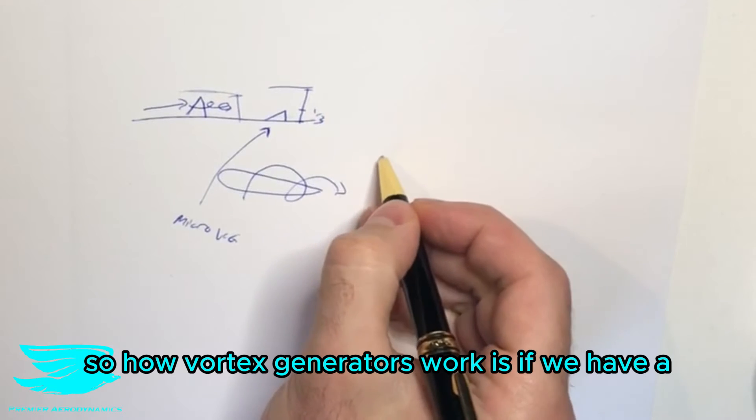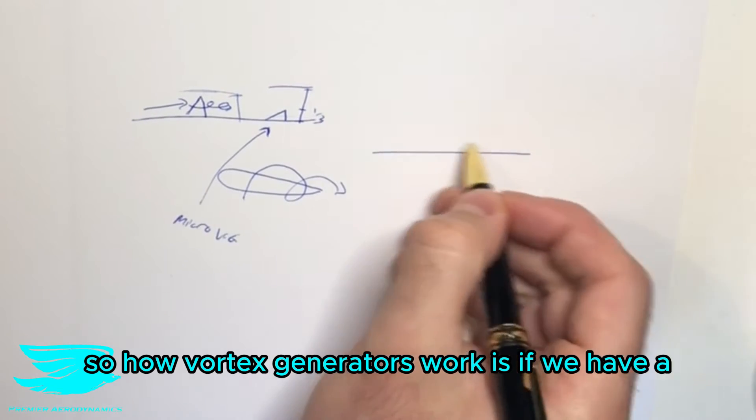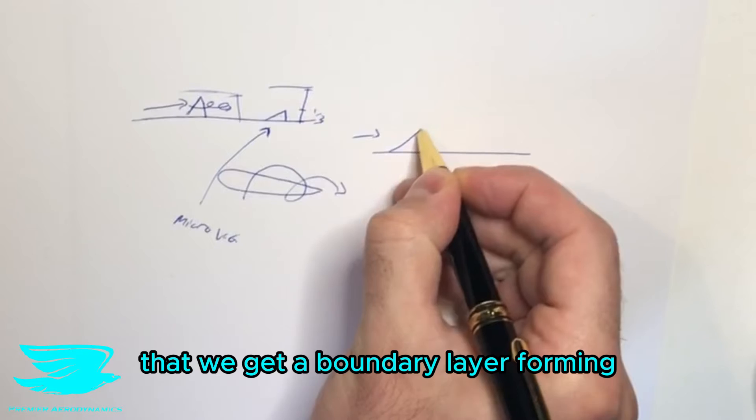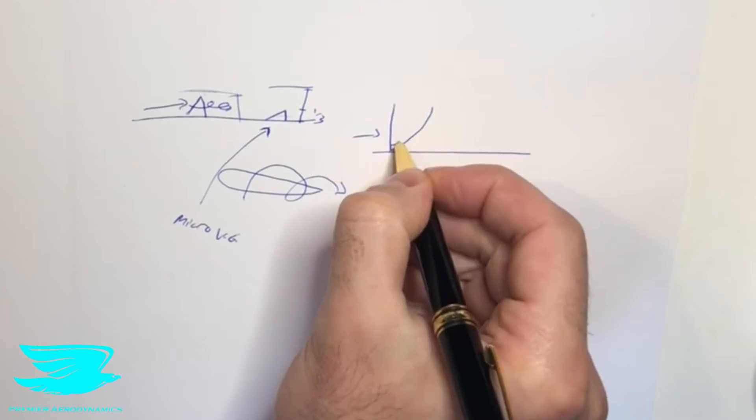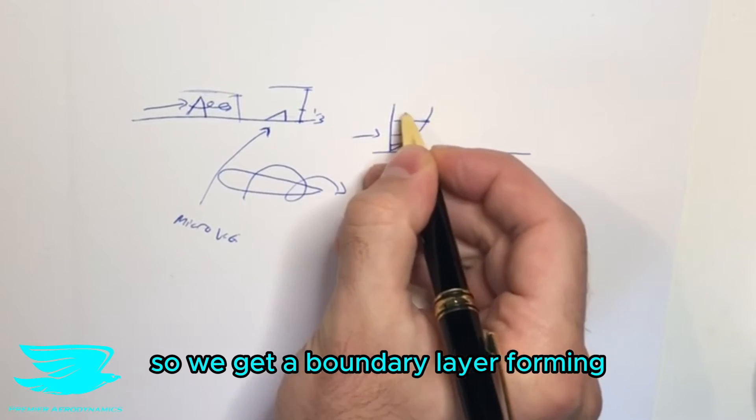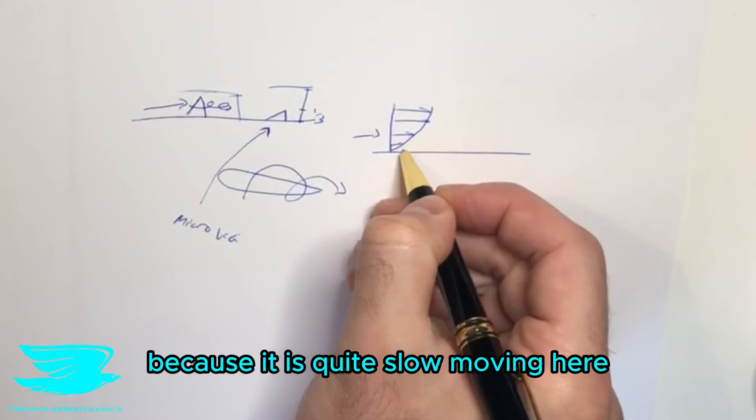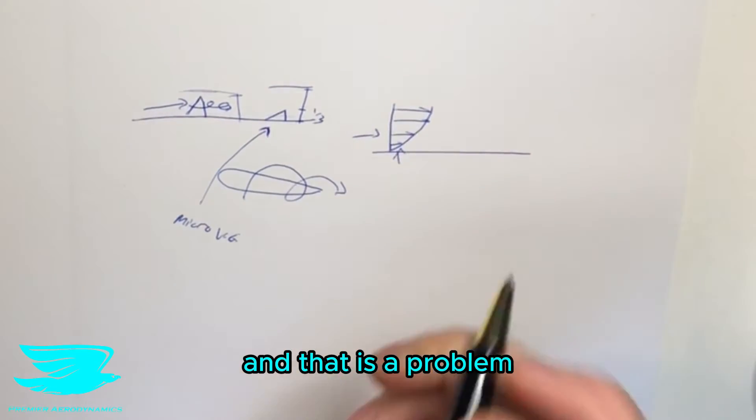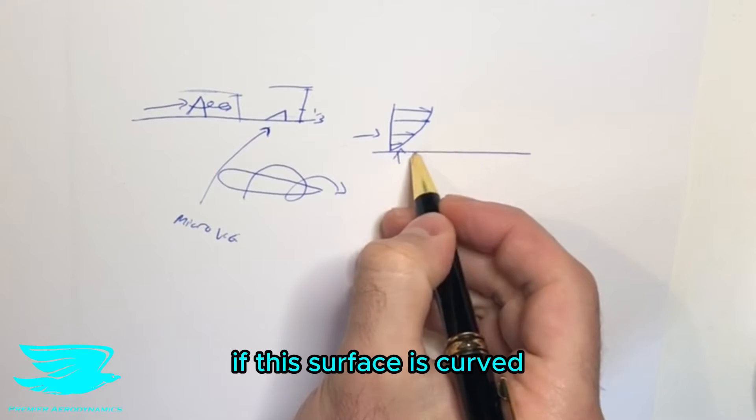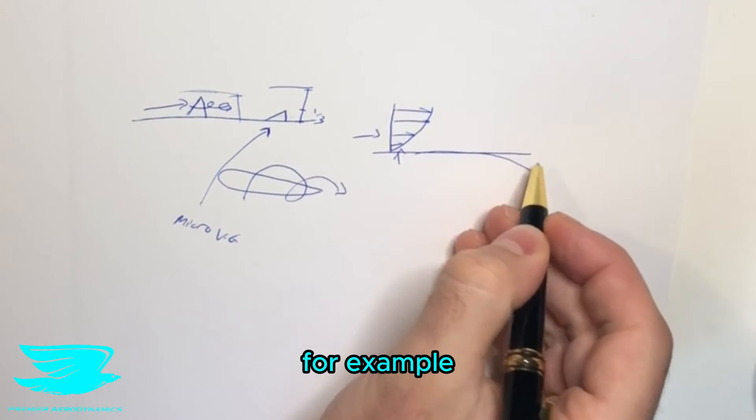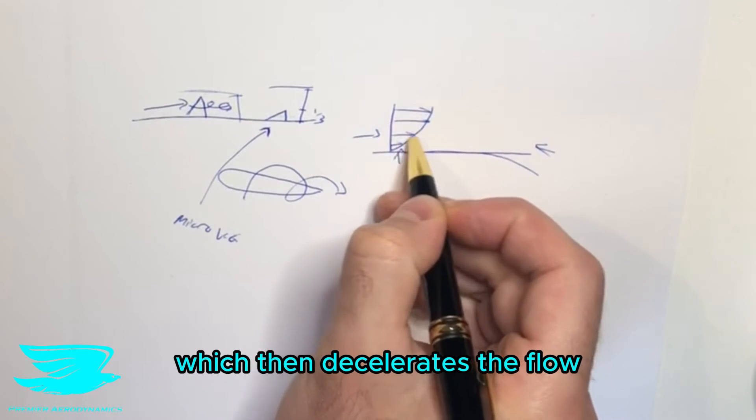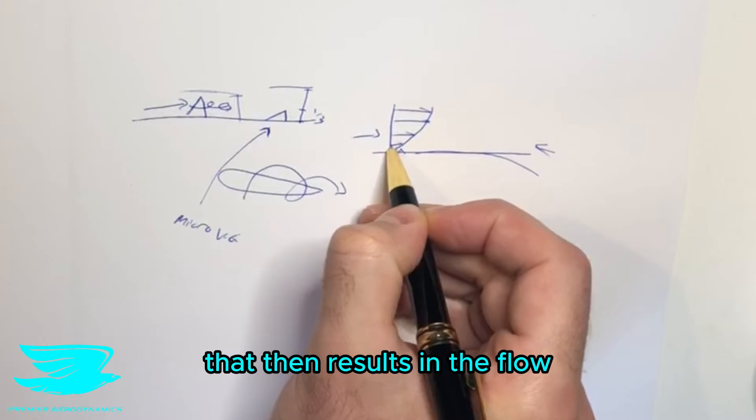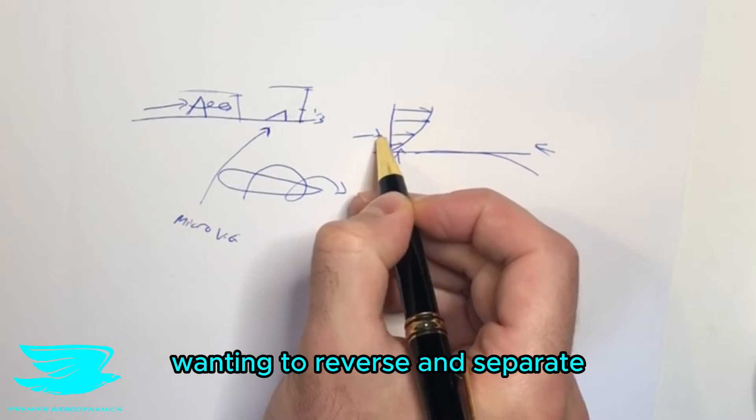So how a vortex generator works is if we have a surface and the flow comes over it, we obviously know that we get a boundary layer forming. And if you don't know about this, check out this video here. So we get a boundary layer forming. And this one is probably laminar because it is quite slow moving here. And that is a problem. Because as the flow goes along, if this surface is curved, for example, we then get a back pressure, this adverse pressure gradient, which then decelerates the flow in this region. That then results in the flow wanting to reverse and separate.